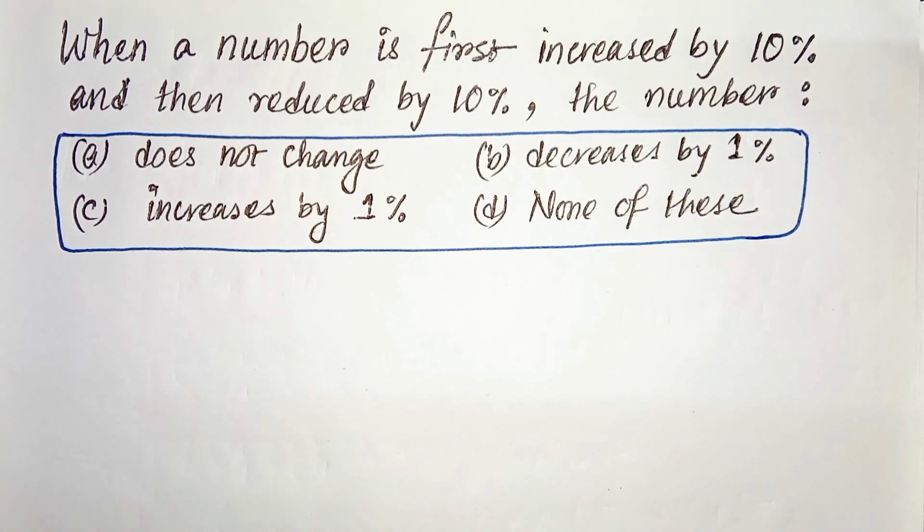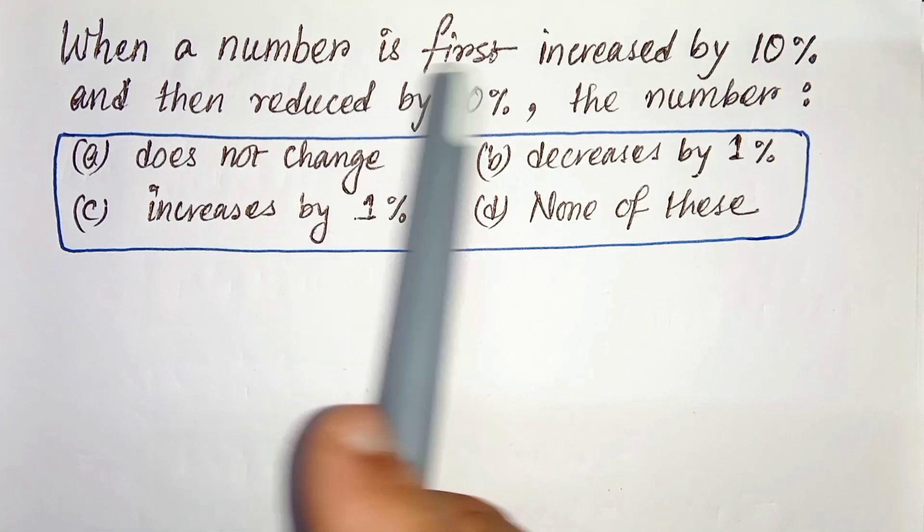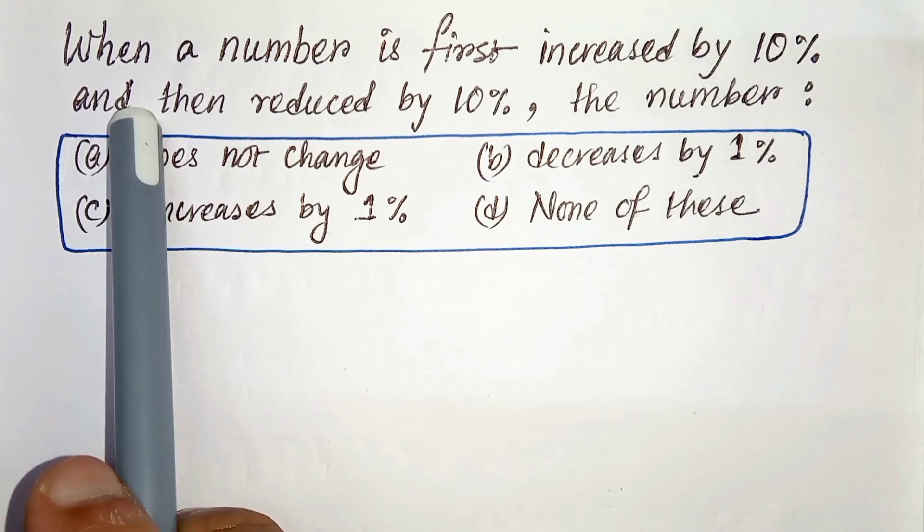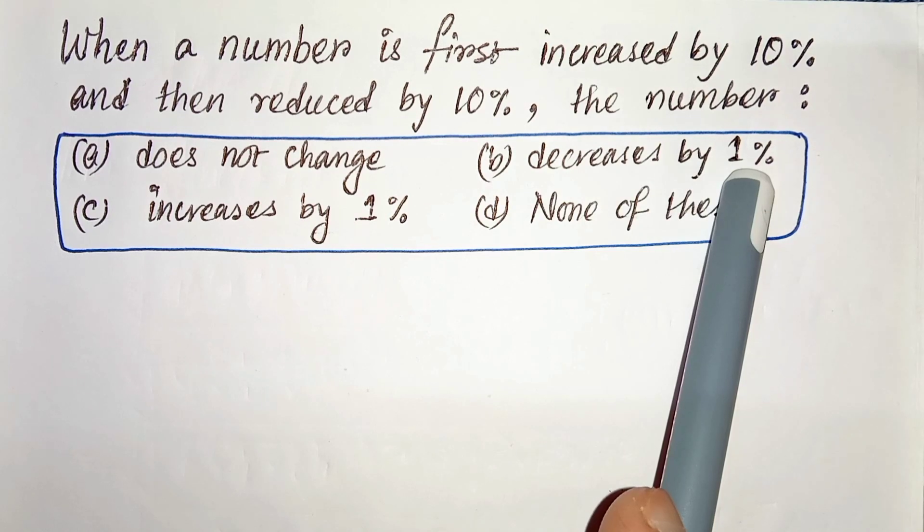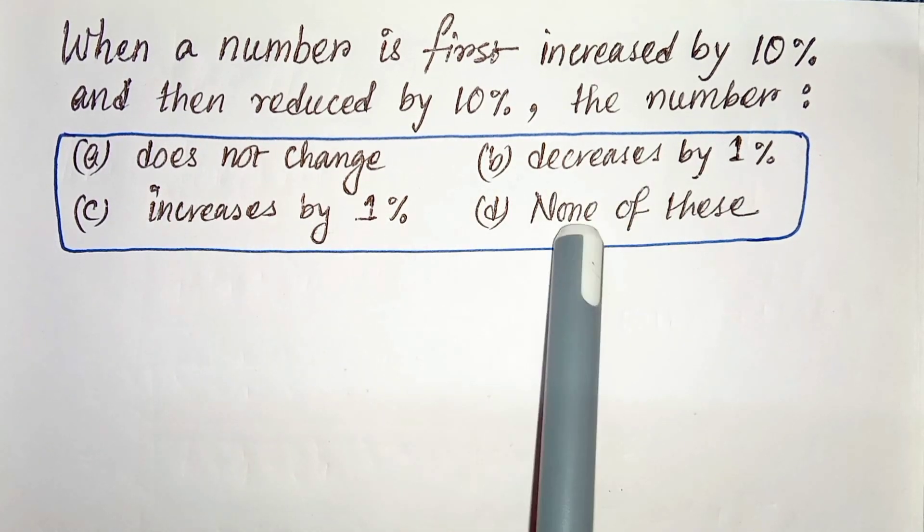Hello everyone, in this video we have a problem: when a number is first increased by 10% and then reduced by 10%, does the number not change, decrease by 1%, increase by 1%, or none of these?